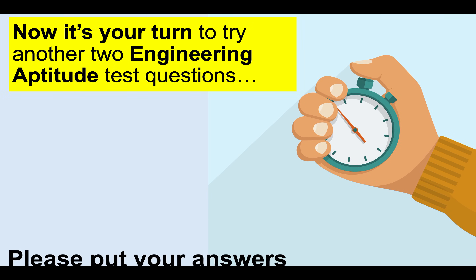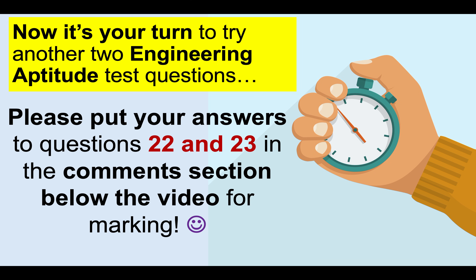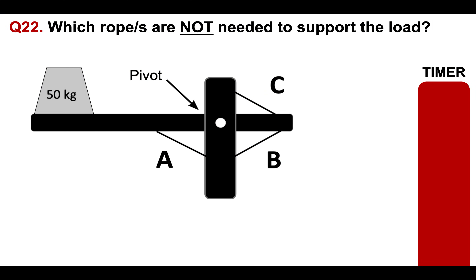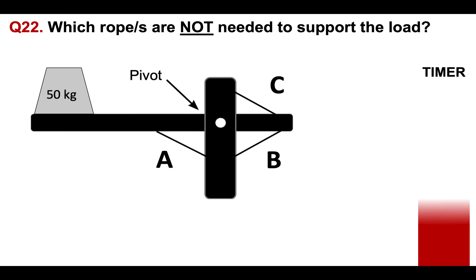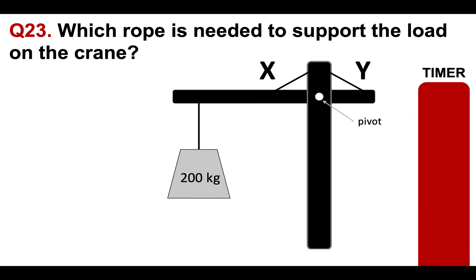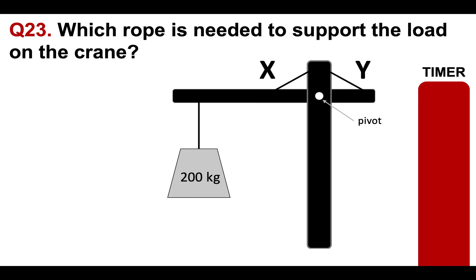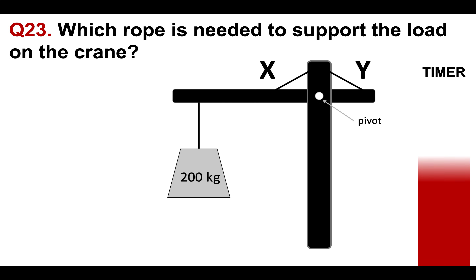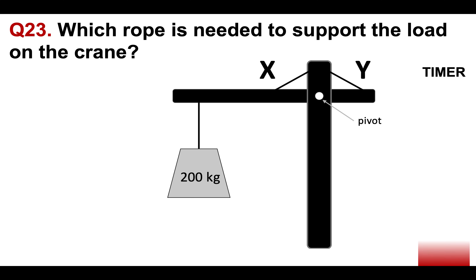Now it's your turn to try another two engineering aptitude test questions. Please put your answers to questions 22 and 23 in the comments section below. Question 22: which rope or ropes are not needed to support the load? Look at the pivot and the load on the left-hand side. Question 23: which rope is needed to support the load on the crane — X or Y? There's the pivot and there's the weight. There's only one of them needed.